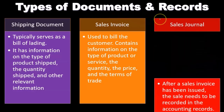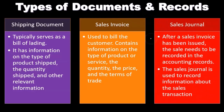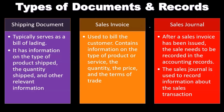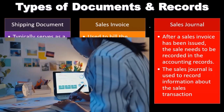After a sales invoice has been issued, the sales need to be recorded in the accounting records. The sales journal is used to record information about sales transactions. The sales journal is a specialized journal that shows basically the sales type of reports.